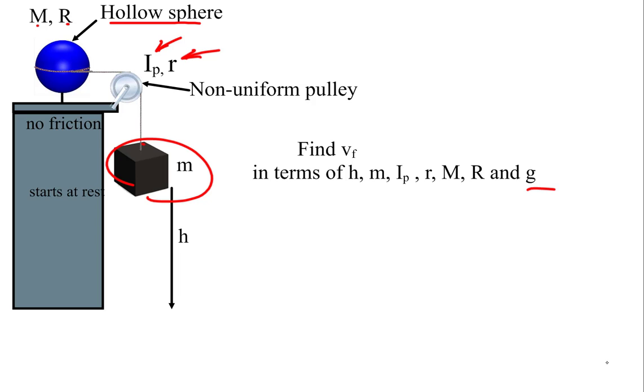This is all going to descend as a system. As the mass descends, the disk adopts an angular velocity that's associated with the tangential velocity of that string, and then we have the string wrapping around the equator of this hollow sphere, so we're going to be able to relate all those.